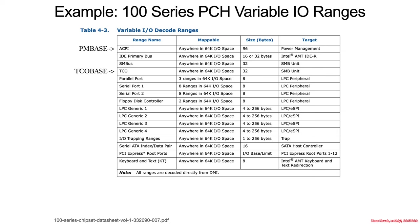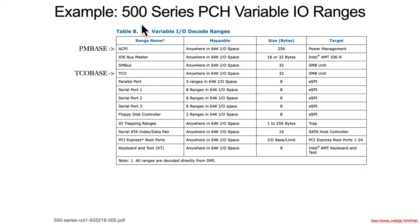If we looked at a newer piece of hardware, the 100 series PCH, we would see that the ACPI range was increased in size to 96 bytes, with TECO placed anywhere within the 64 kilobyte range. On an even newer 500 series PCH, the ACPI power management port IO range is increased to 256 bytes anywhere in the 64 kilobyte range, and TECO is still 32 bytes. The number of peripherals accessible via port IO is actually decreasing with each subsequent generation.